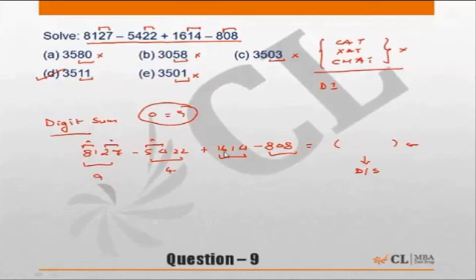Digit sum of 1614: 6, 7, 8, 12. 12 means 3 and 16 means 7. So 9 minus 4 is 5, 5 plus 3 is 8, 8 minus 7 is equal to 1. So this has a digit sum of 1. So the digit sum of the answer should also be equal to 1. So look at the choices. Whichever does not have a digit sum of 1 should be incorrect.